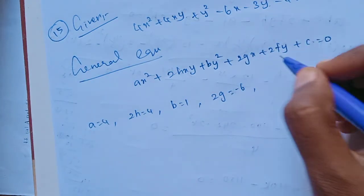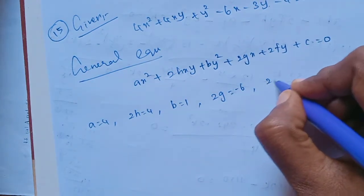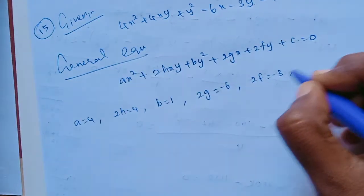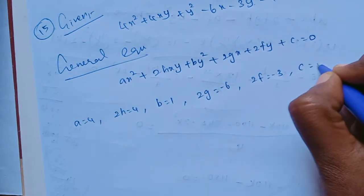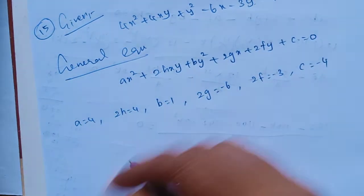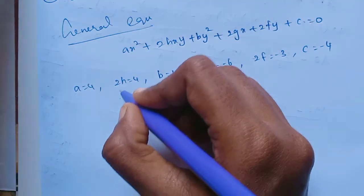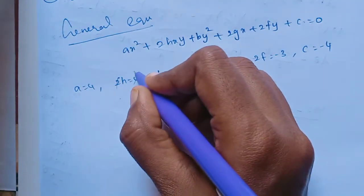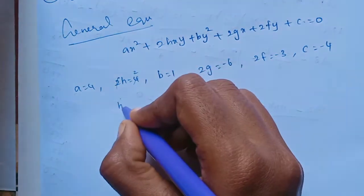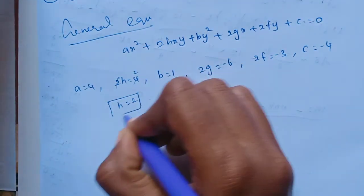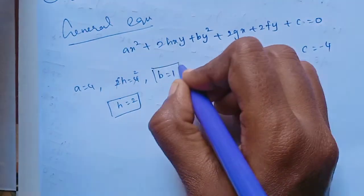Continuing: the y term gives 2F = -3, and the constant gives C = -4. From 2H = 4, H = 2. From 2G = -6, G = -3. From 2F = -3, F = -3/2.